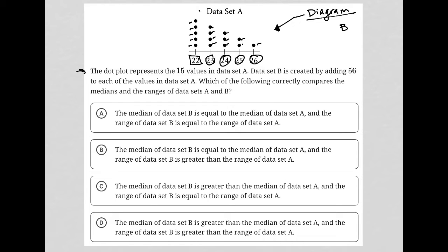Data set B would look just like data set A, except 22 becomes 78, 23 becomes 79, then 80, 81, and 82. The counts remain the same: five 78s, four 79s, three 80s, two 81s, and one 82.